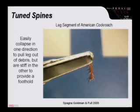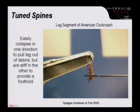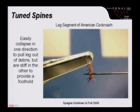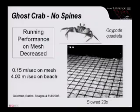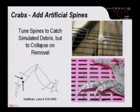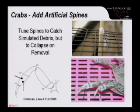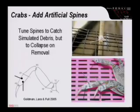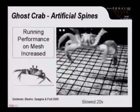Here's a segment of that spine. They're tuned such that they easily collapse in one direction to pull the leg out from debris, but they're stiff in the other direction so they can capture the asperities in the surface. Crabs don't miss footholds because they normally move on sand, but they have a problem with mesh terrain because they don't have spines. We can deal with that by producing artificial spines — spines that catch on simulated debris and collapse on removal. We put these artificial spines on crabs and tested them. This is slowed down 20-fold, and the crab just zooms across that simulated debris.